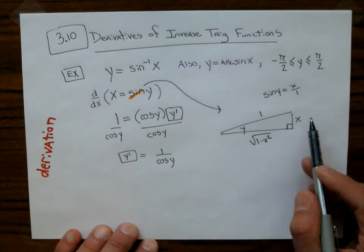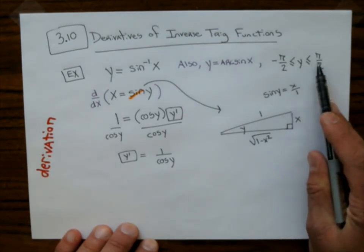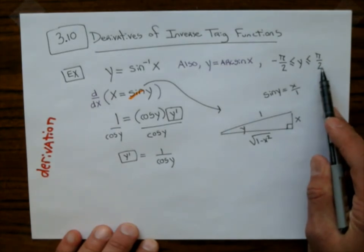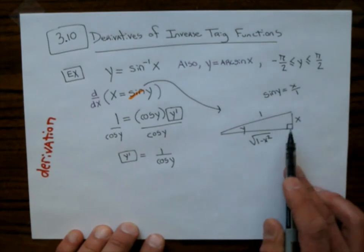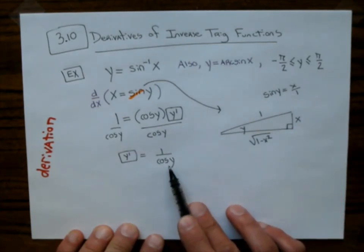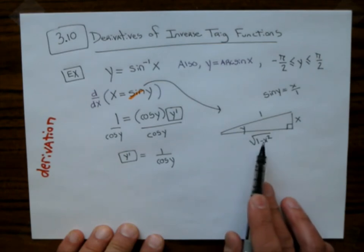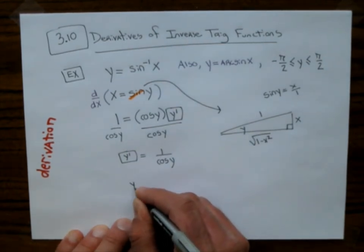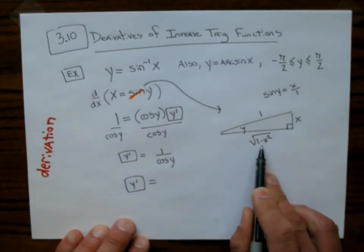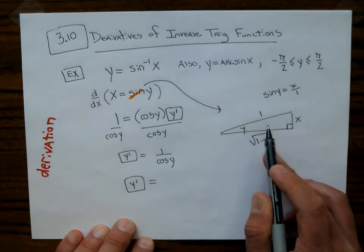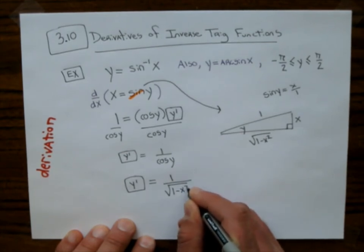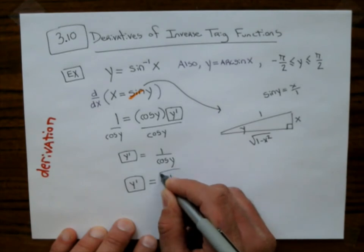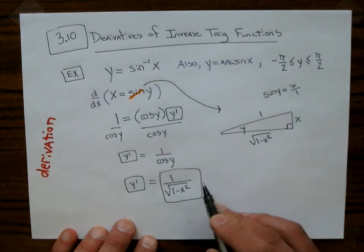We can make the argument that we can do this proof between 0 and 90. But because cosine of negative theta equals cosine of theta, we can cover all those angles. The cosine of y — adjacent over hypotenuse — is the square root of 1 minus x squared divided by 1. So y prime equals 1 over the square root of 1 minus x squared. That right there is the derivative of sine inverse x.